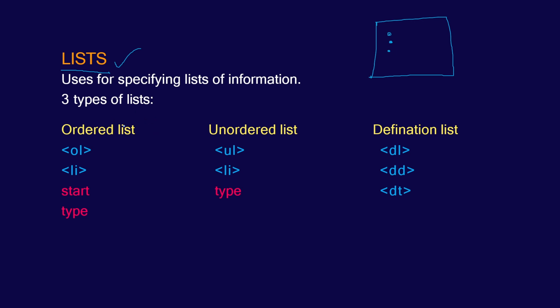There are three types of HTML lists present. One is the ordered list, one is the unordered list, and one is the definition list. As the name specifies, the ordered list is going to present you the list with a certain order, which will be in ascending order format. So for example, the default format is 1, 2, 3, 4, and so on.